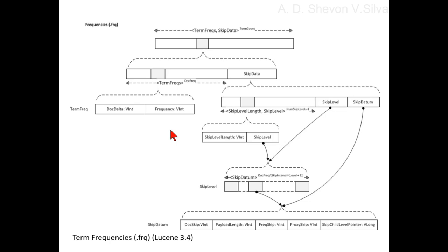Here's how it is calculated. In order to save space, Lucene does not store the doc ID as-is. Instead it calculates the delta: doc ID delta equals 7 and frequency equals 1; doc ID delta equals 4 (11 minus 7) and frequency equals 3.